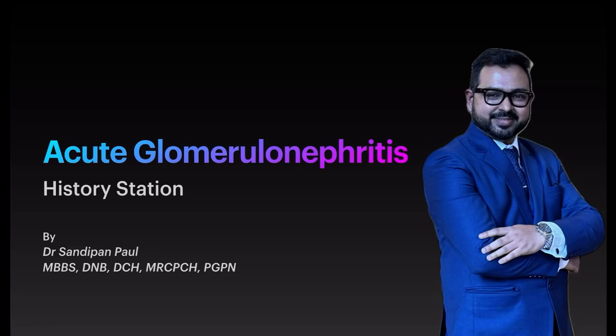Hello friends, today we will discuss another important topic: acute glomerulonephritis. You would expect this case in a history station. For the history station, 22 minutes are allotted in total — 14 minutes for taking history and 8 minutes for discussion. Total marks allotted: 10.